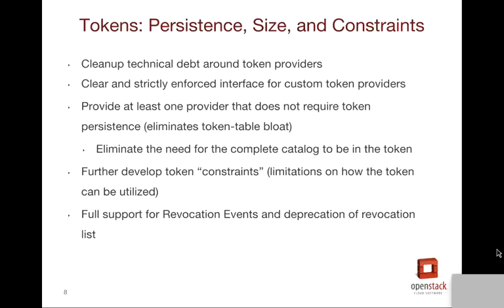Tokens have had a number of issues throughout the lifespan of Keystone. We are working to improve tokens, including persistence issues, size issues, and improving how tokens can be utilized by limiting access for certain types of tokens. A lot of this is technical debt cleanup around the token providers themselves, making it very easy to develop your own custom token provider, and providing a few new providers in-tree that will improve the deployer experience. We are looking to provide in the Kilo cycle at least one provider that does not require any persistence of the token itself, which will eliminate all SQL table bloat issues, as well as issues that have cropped up around the memcached token driver.